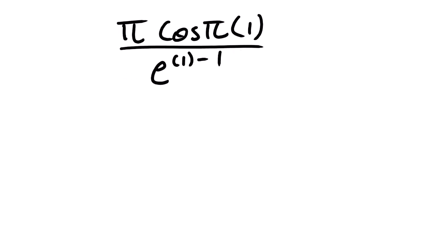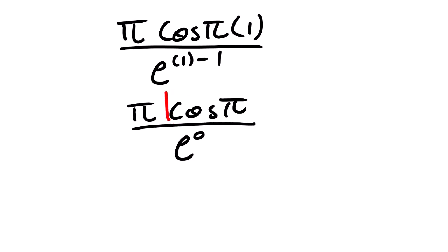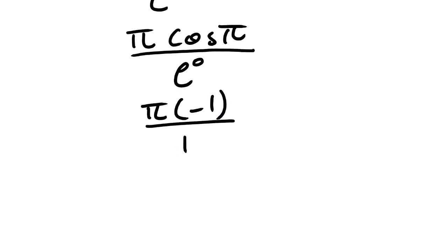Let me simplify this. e to the power (1 minus 1) is e to the power 0, which equals 1. And cos(π) is equal to negative 1. So we are going to have π times negative 1 all over 1, and our final answer is simply negative π.